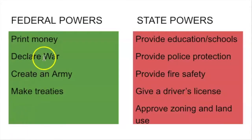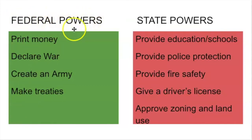If you look over here in the green box, you will see that these are all federal government powers. The federal government is allowed to print money. Can you imagine what it would be like if each state had its own money? If Maryland had their own dollars and Virginia had her own dollars, it would be crazy. So this is a federal government power — every state has the same money, and it's printed by the federal government.